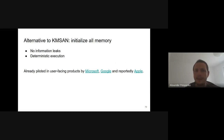Instead of chasing every uninitialized variable in the whole system, we could initialize all memory at creation time. This sounds crazy but is potentially doable. Initializing all local and heap variables serves two purposes: first, no data can possibly leak; second, if we have code using uninitialized data, it will always execute deterministically. To some extent, this approach is already deployed by Microsoft, Apple, and Google in their user-facing products.